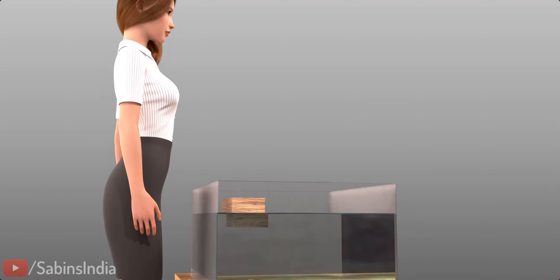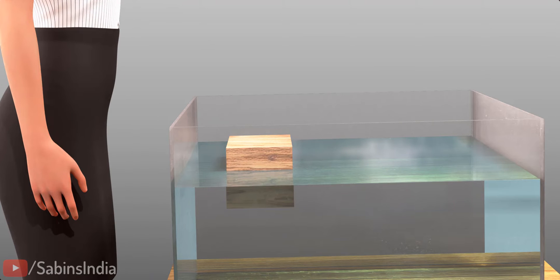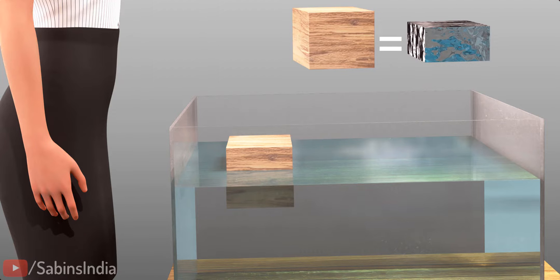Now, let's analyze the block in its equilibrium position. At the equilibrium position, the block displaces a much smaller volume of water. Here, if you check the weight of the displaced water, it will be the same as the weight of the block. In short, at the equilibrium position, the buoyancy force and the weight of the block balance.